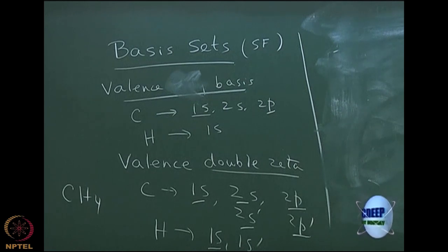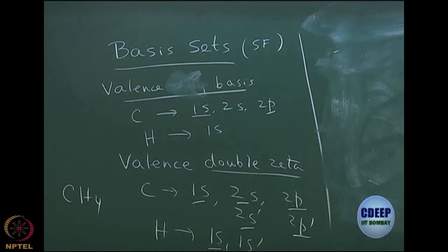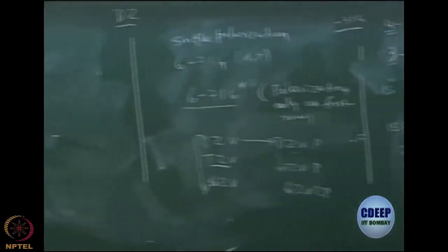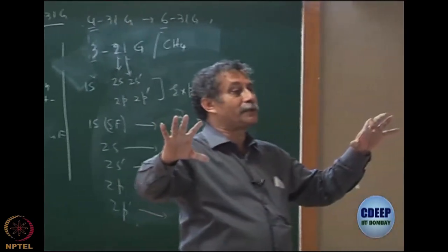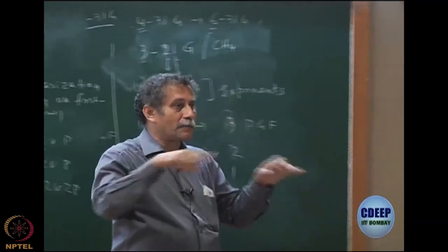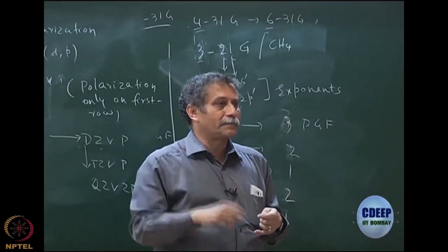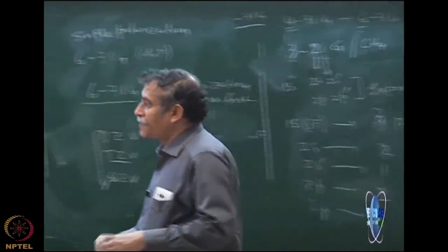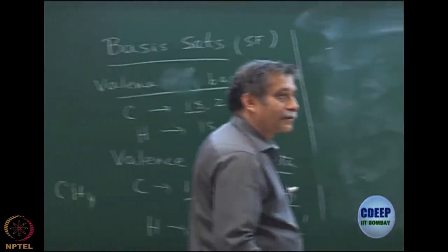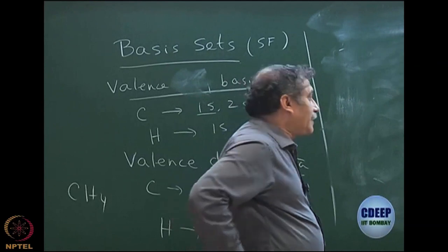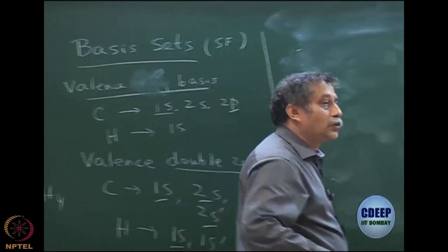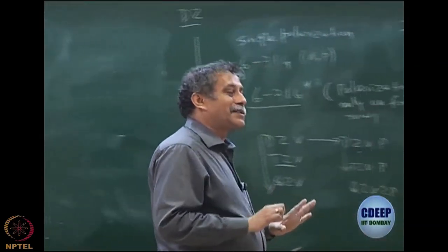Double-zeta gives more flexibility on the valence — that is always better than single-zeta. In fact, today we never use single-zeta basis sets. The simplest basis set we have is STO-3G, or STO-NG in general.